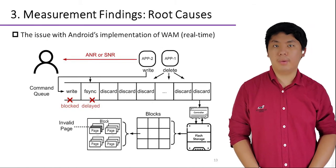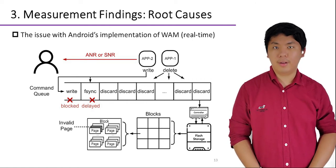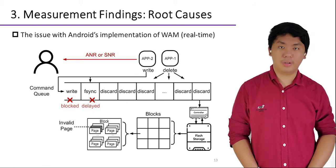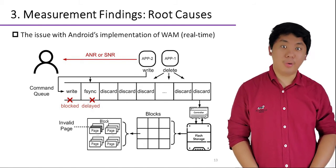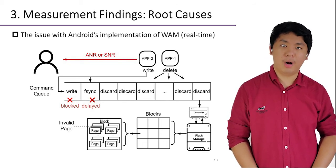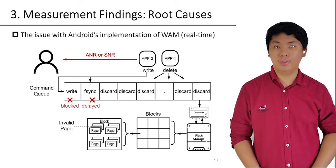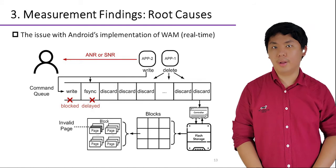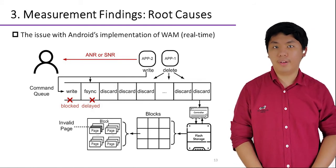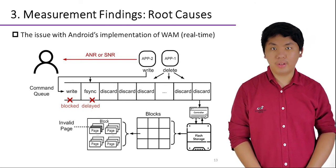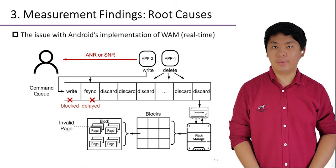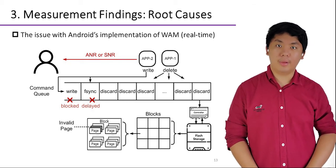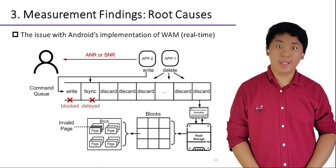WAM is a mechanism introduced to mitigate the write amplification problem in flash storage. As a common storage medium for smartphones, flash storage has a unique characteristic compared to traditional rotating disk storage: a block-level erase operation is required before writing data into a page, leading to the write amplification problem. That is, when you write data to flash storage, the actual data write amounts might be much larger than the original data size. To address this, Android introduces WAM, which issues the discard command upon file deletion to tell the flash storage which pages containing the file's data are invalid. The flash storage can later trim blocks with invalid pages to improve write performance. Currently, Android's WAM operates in a real-time manner that issues discard commands immediately upon file deletions.